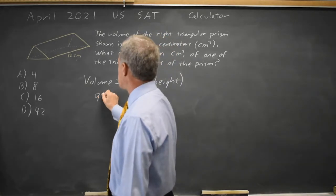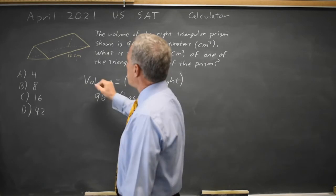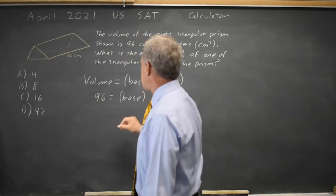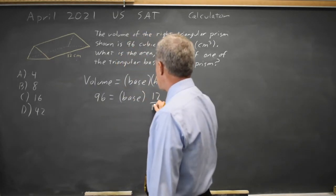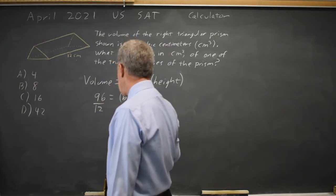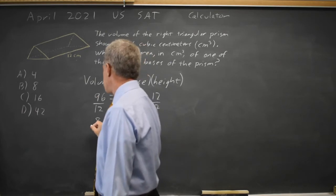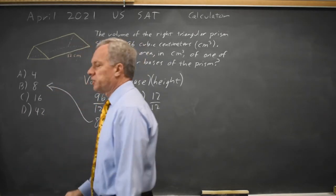They give us here the volume is 96. We're looking for the base, and if you stand this on the triangular end, the height will be 12. Divide both sides by 12 and you get the area of the base is 8, and that will be in square centimeters, which is choice B.